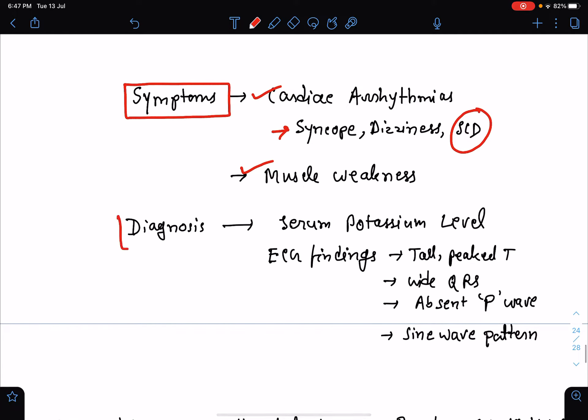Now how do we diagnose a case of hyperkalemia? We can know from the serum potassium level if the patient is having hyperkalemia or not. Other than serum potassium level, we can look at the ECG findings. There are certain typical ECG findings for hyperkalemia: tall and peaked T-wave, wide QRS complex, absent P-wave, and sine wave pattern. In cases of severe hyperkalemia, the QRS becomes so wide that it merges with the T-wave, ultimately resulting in a sine wave pattern.